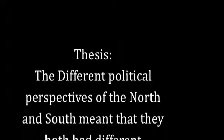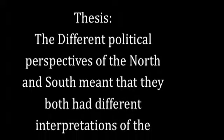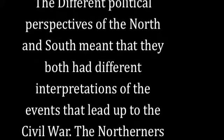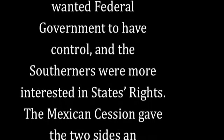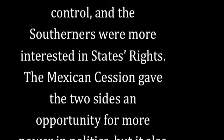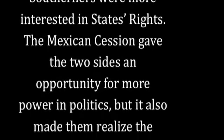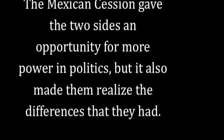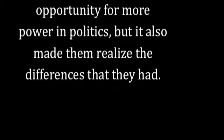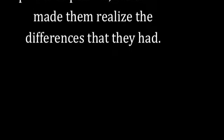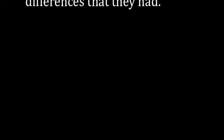The different political perspectives of the North and South meant that they both had different interpretations of the events that led up to the Civil War. The Northerners wanted federal government and the Southerners wanted states rights. The Mexican Cession gave the two sides an opportunity for more power in politics but also made them realize the differences that they had.